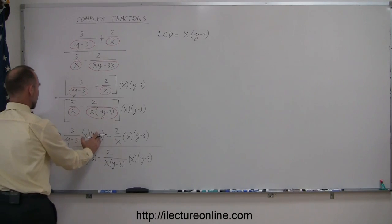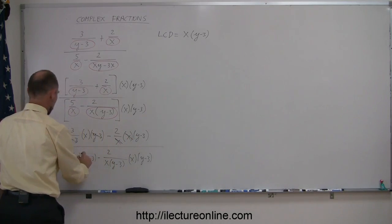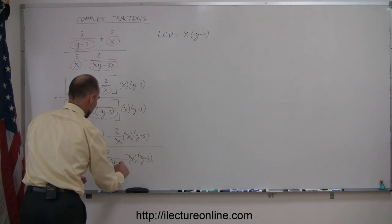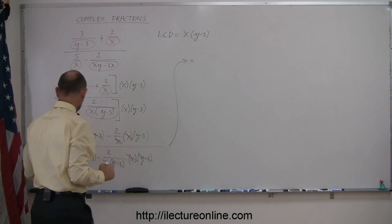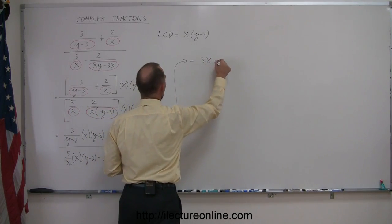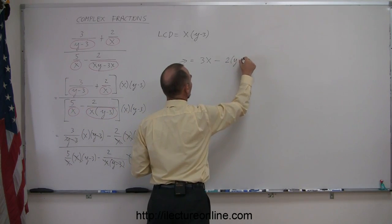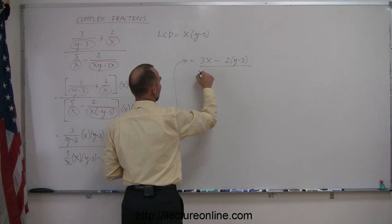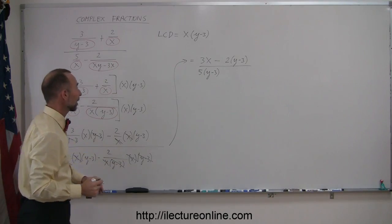Now I can see that the y minus 3 cancels out with the y minus 3. The x cancels out with the x. Here the x cancels out with the x, and the y minus 3 cancels out with the y minus 3. What I have left over is 3 times x minus 2 times y minus 3, divided by 5 times y minus 3, and just a negative 2. Everything else has cancelled out.